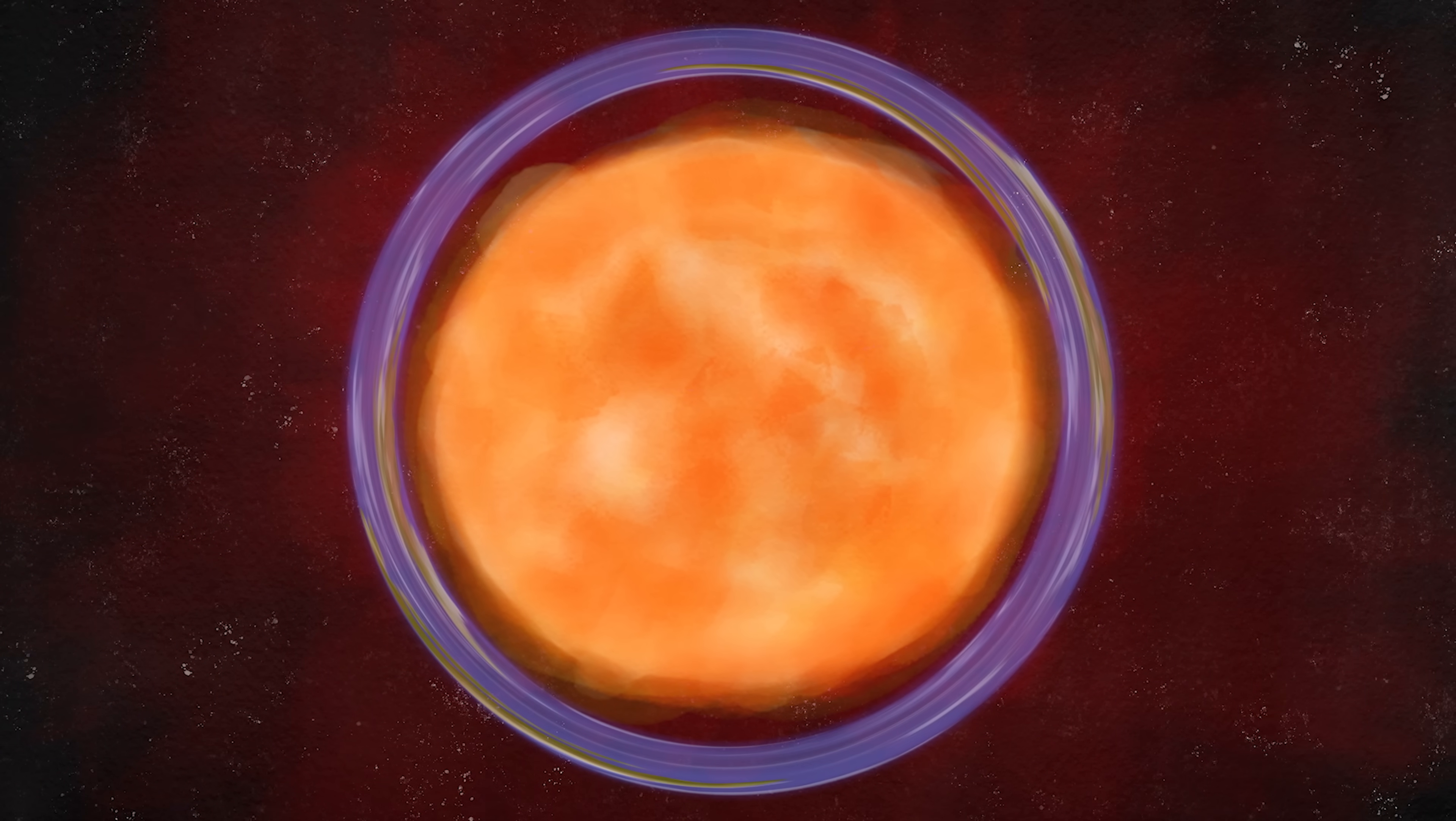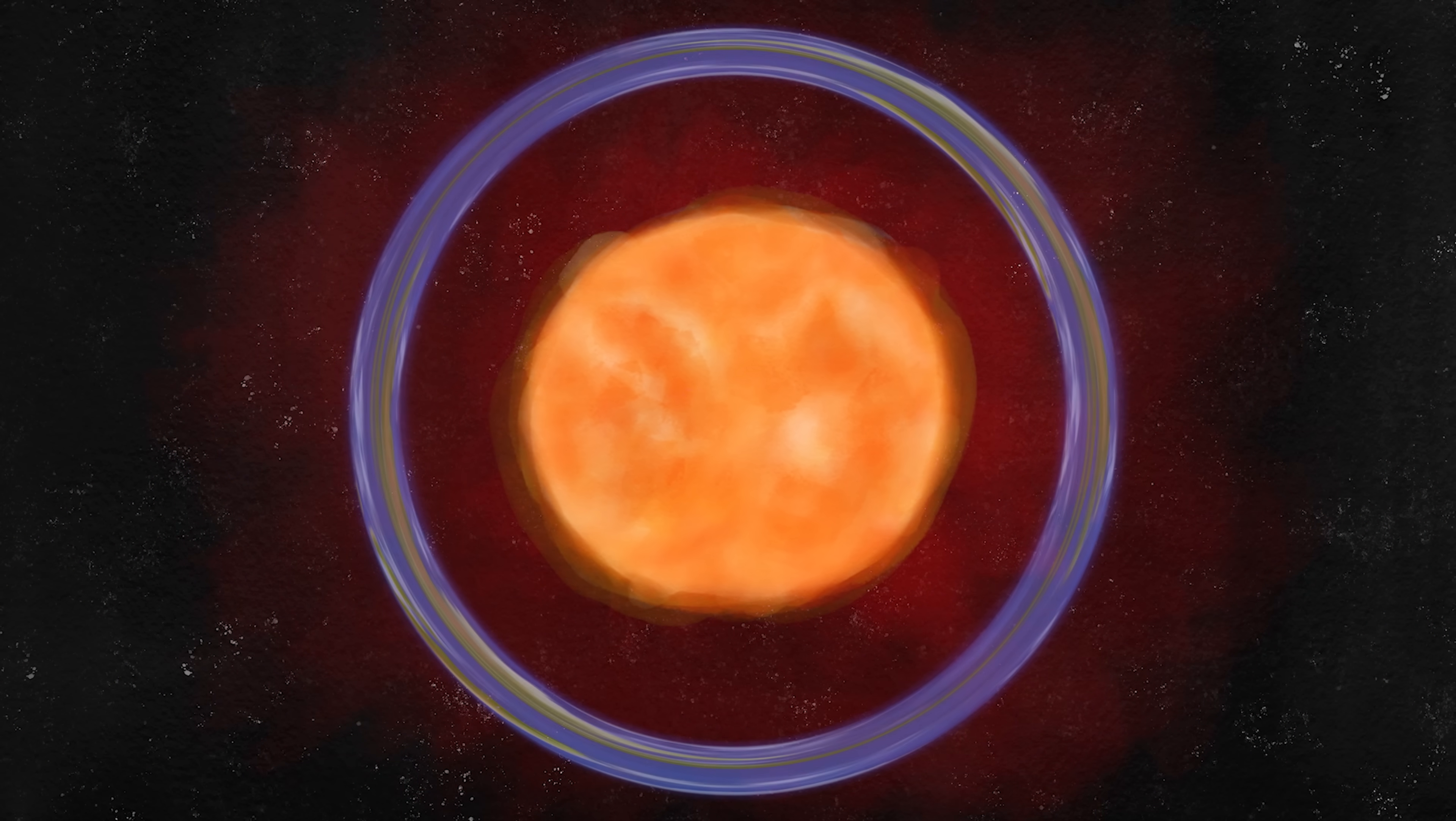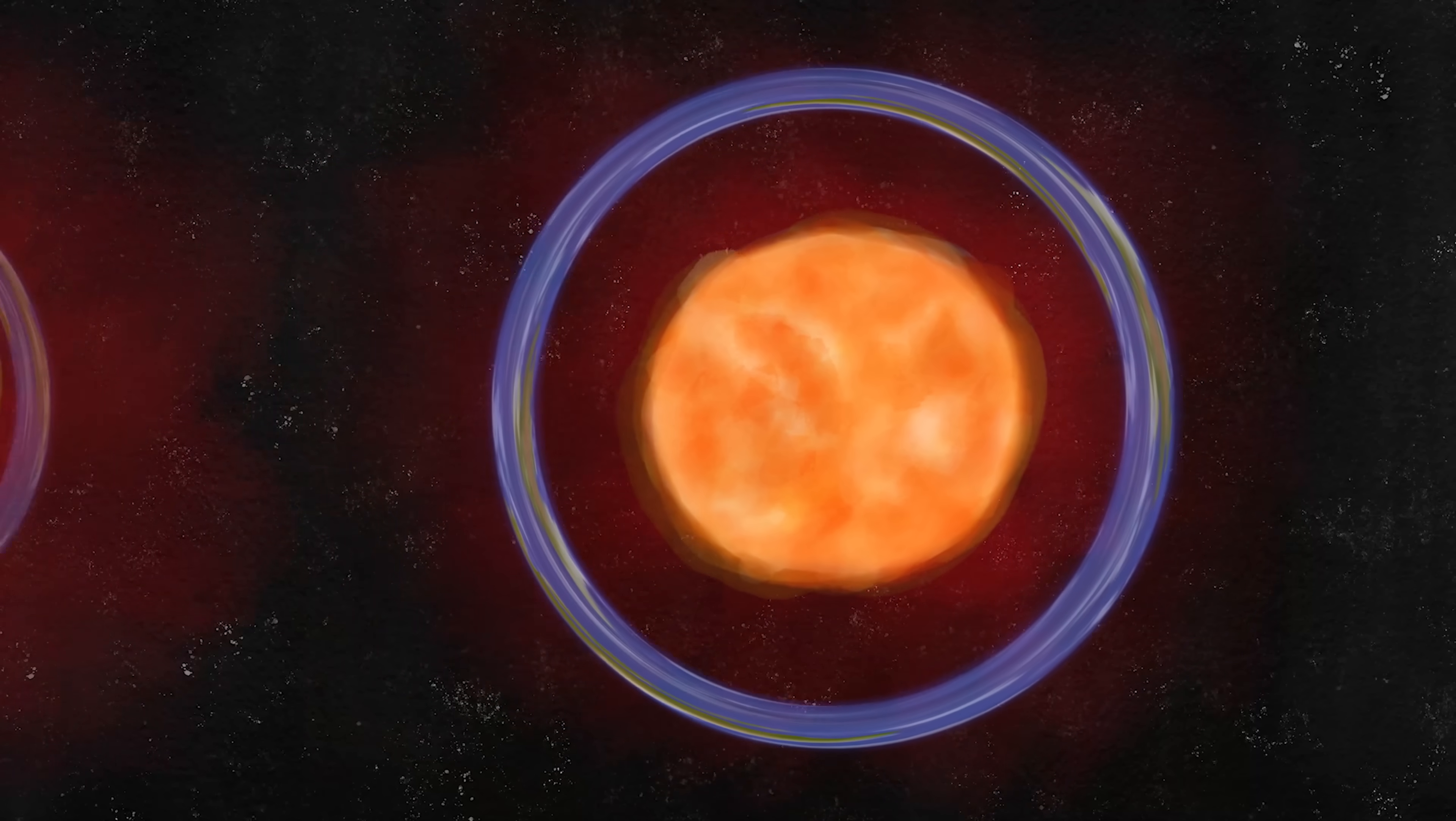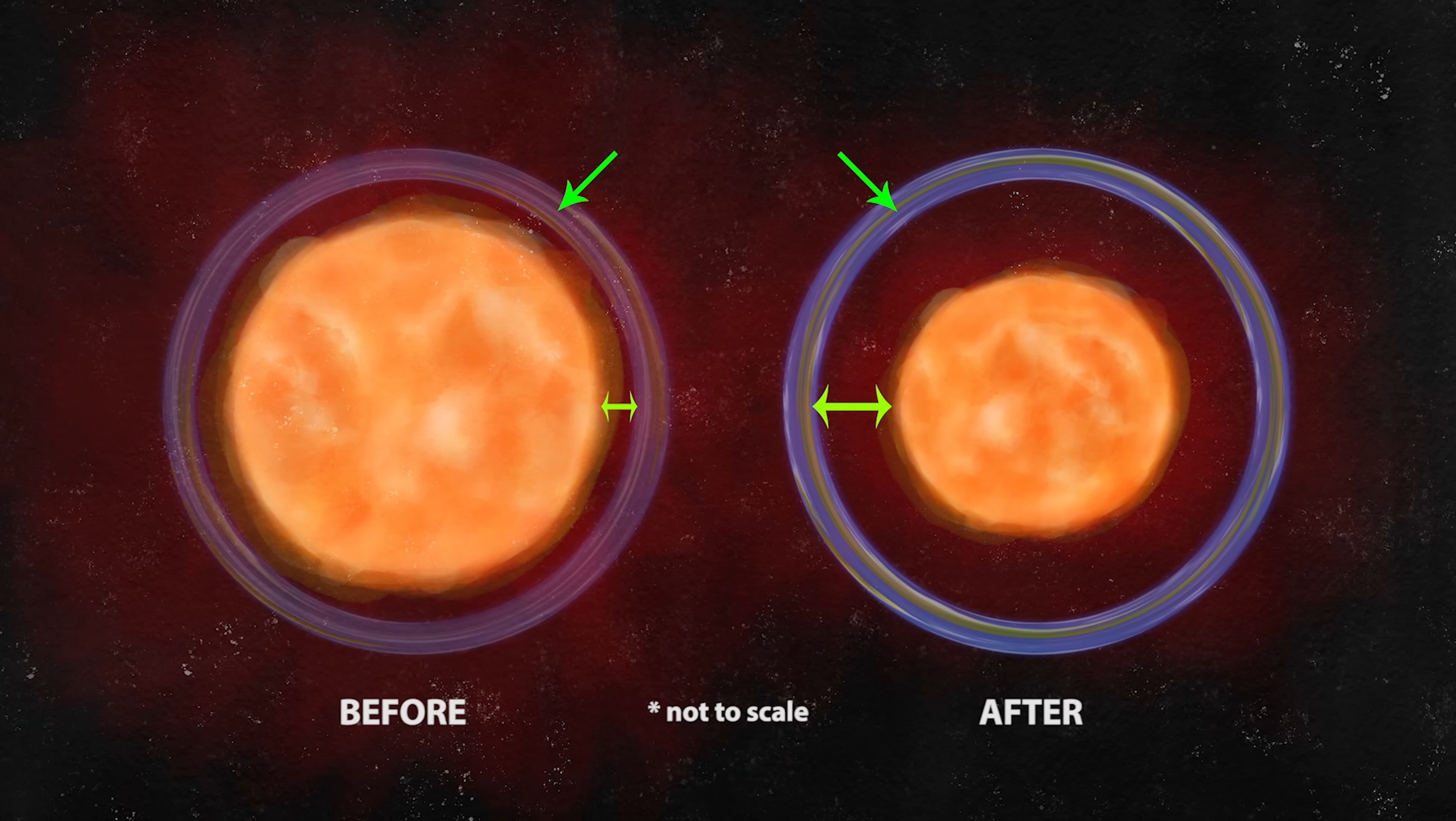When the telescope is further from the sun, naturally it will appear smaller. The magnification of the exoplanet stays the same, but the Einstein ring is now at a greater distance from the sun's surface, so there's less corona light to contend with.